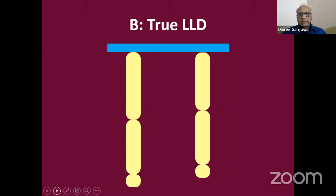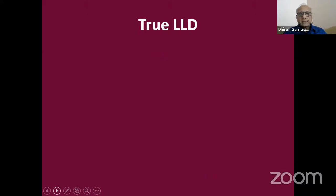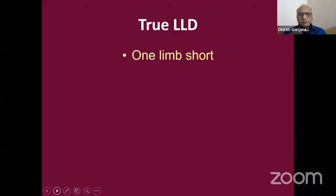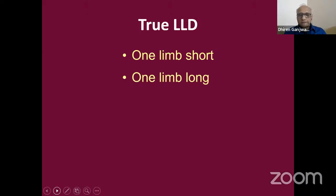Now we come to the second variety: true limb length discrepancy. There is a definite difference in limb length between the two sides. This can be divided into two varieties: one limb is short, or one limb is longer — or sometimes there is a combination of both where one limb is shorter and the other is longer, and both contribute to the limb length discrepancy.